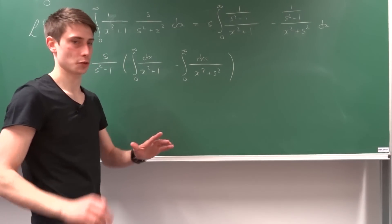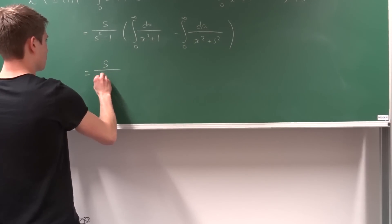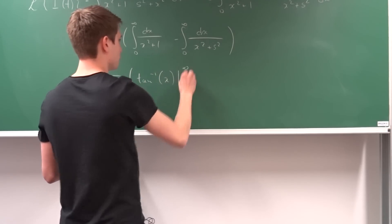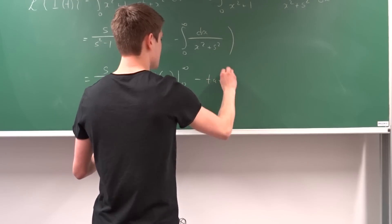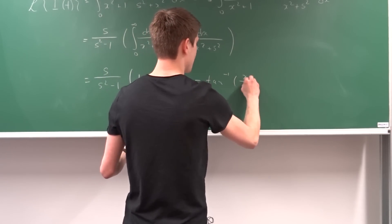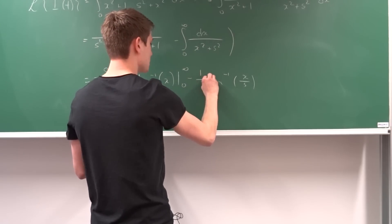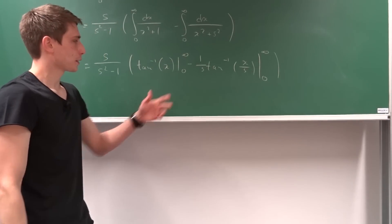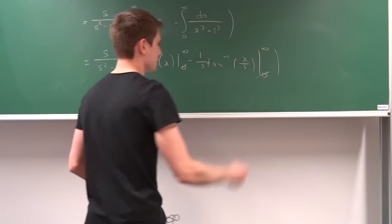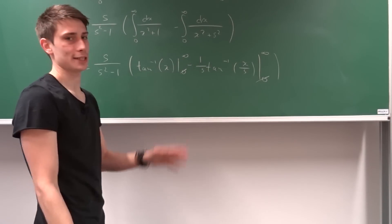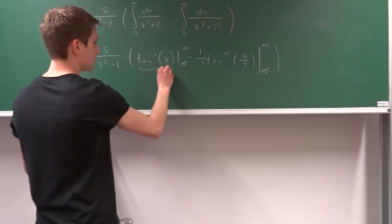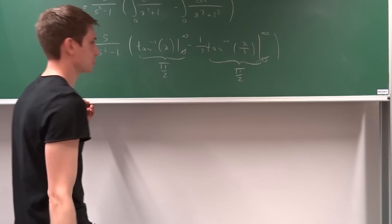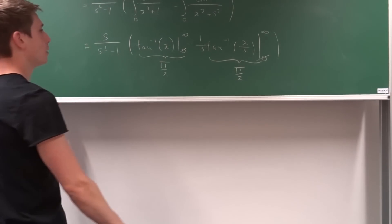We know how to integrate those — they're really easy. The first integral is just the inverse tangent of x from 0 to infinity, and the second is the inverse tangent of x over s times 1 over s, from 0 to infinity. The inverse tangent of zero is always zero, and plugging in infinity gives pi over two. So both evaluate to pi over two.